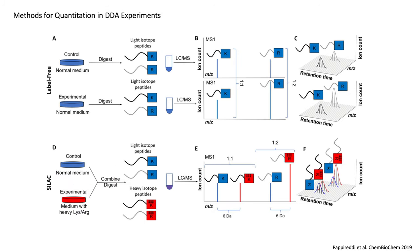Within a DDA experiment, there are also different ways that one can perform quantitation to get relative information about protein abundance. First are label-free methods, in which cells are grown in normal media, the proteins are digested to peptides, peptides are isolated, and then analyzed by the mass spectrometer. Quantitation is generally performed from the parent ion mass using an extracted ion chromatogram, which looks a lot like an HPLC profile.